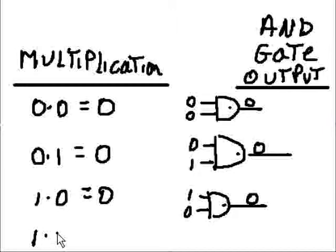In an AND gate, if one input is 1 and the other input is a 1, then 1 ANDed with a 1 will give you a 1. So the AND gate output mirrors or perfectly reflects the corresponding multiplication output.